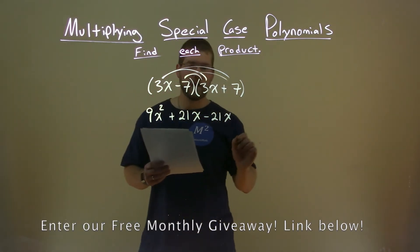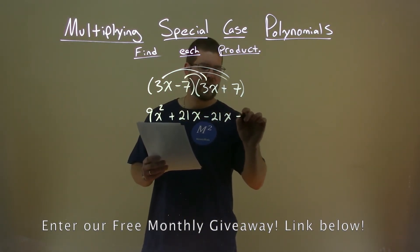And negative 7 times a positive 7, well, that's a negative 49.